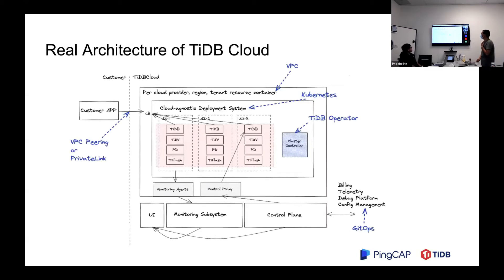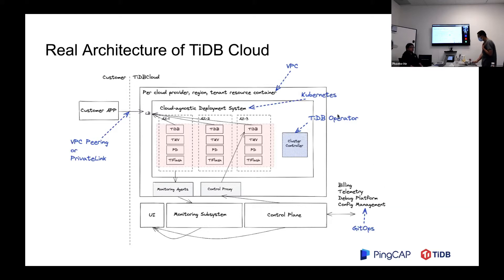Let's turn to something real. For a cloud-agnostic deployment system, naturally we chose Kubernetes. Kubernetes works on GCP, AWS, and on-premise. Within Kubernetes, we developed an open-source project called TiDB Operator, which manages TiDB clusters and Kubernetes resources. You can spin up a Kubernetes cluster, install TiDB Operator, and then use kubectl to start a TiDB cluster. We also use the cloud-provided VPC for the isolation layer.